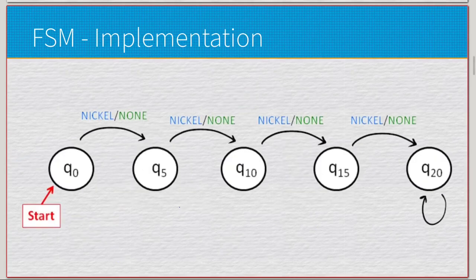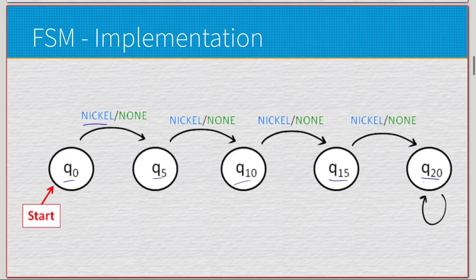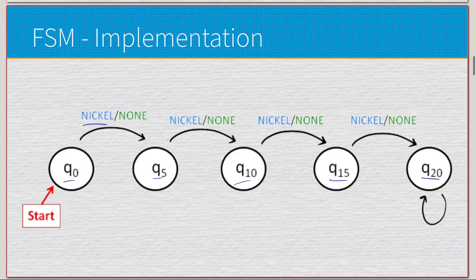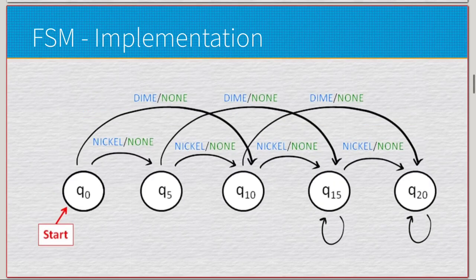We can add more complexity. Now instead of just 'coin' we have specific coin types — in this case nickels. Instead of locked and unlocked, we have states q0, q5, q10, q15, and q20, which count up by five representing the amount of money input to the system. Each nickel moves us from q0 to q5, then q10, q15, and eventually q20. At q20 it just loops back on itself because we haven't defined a transition to a new state.